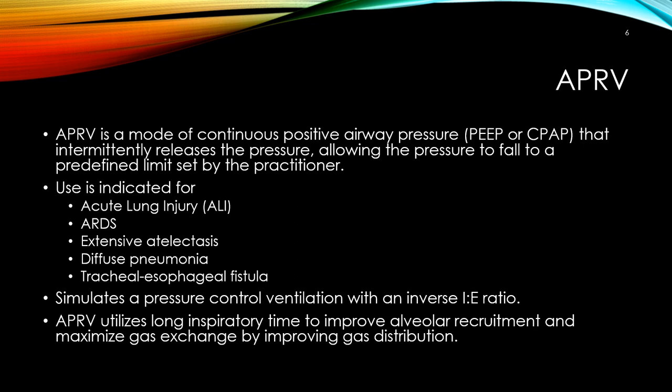To summarize APRV settings: P-high is set to plateau pressure, P-low is set to zero, T-high is normally four to six seconds, and T-low can be anywhere from 0.6 to 1.5 seconds. These are good choices for patients with acute lung injury, ARDS, and the other indications mentioned.